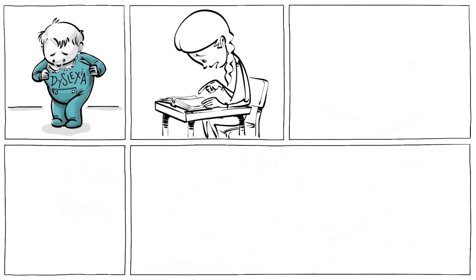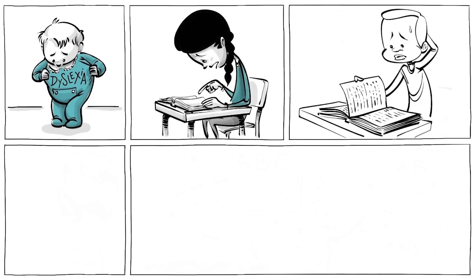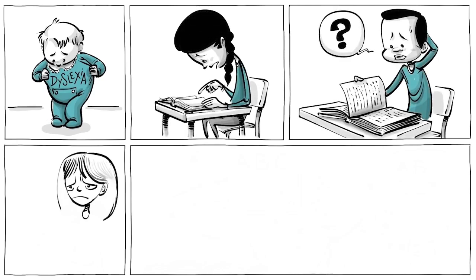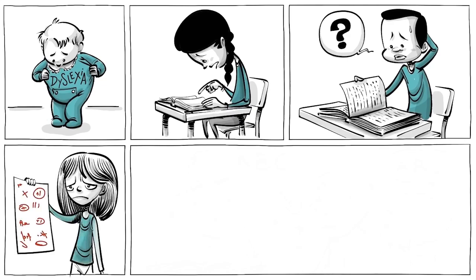Around 5 to 10 percent of all children are born with dyslexia. In school they tend to read slowly, have difficulty understanding simple texts or make a lot of spelling mistakes when writing.